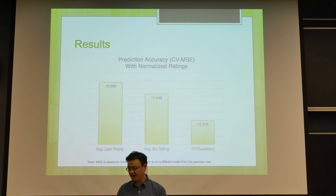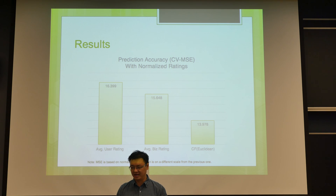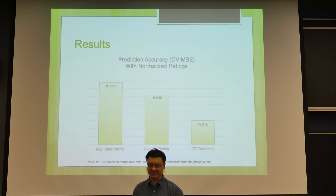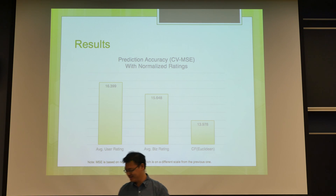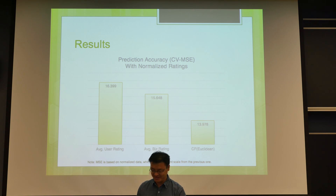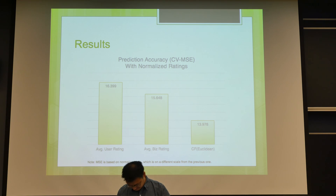After normalization, we found that our CF model performs better than both benchmarks. So the TAs are right: always normalize the data before analyzing it. That's all — hope you find it interesting, thank you.